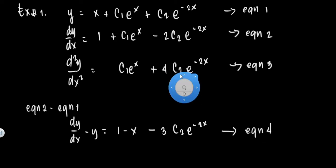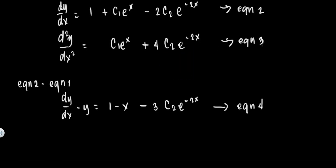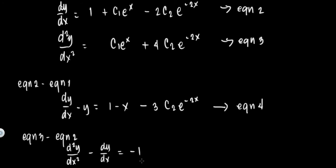Next, let's use equations 3 and 2 to eliminate c1*e^x. Subtract equation 2 from equation 3 (equation 3 minus equation 2). So d²y/dx² minus dy/dx equals: c1*e^x minus c1*e^x is zero, then +4c2*e^(-2x) minus (-2c2*e^(-2x)) is +6c2*e^(-2x). Let's call this equation 5.